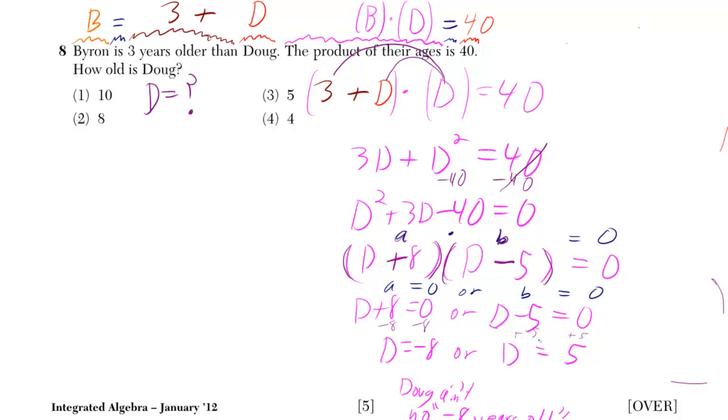And you could check to make sure that that works by putting D is equal to 5 back in here, and 5 minus 5 is 0. It doesn't even matter that 5 plus 8 over here is 13. Because anything times 0 is equal to 0. So D is equal to 5 definitely works.